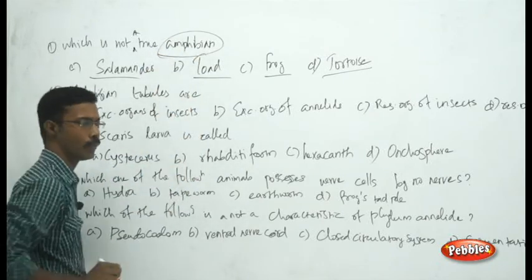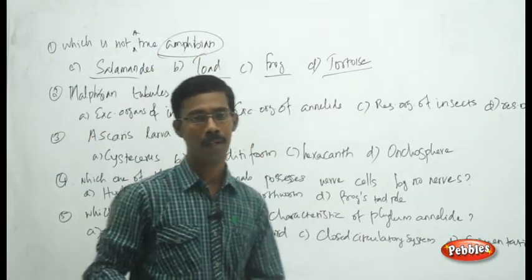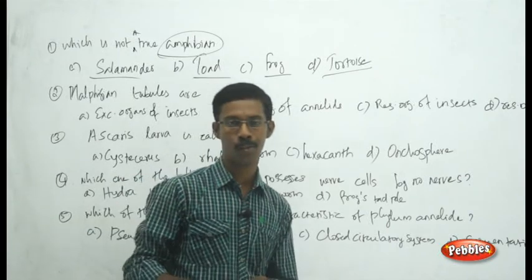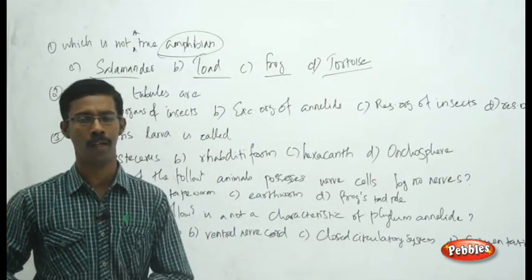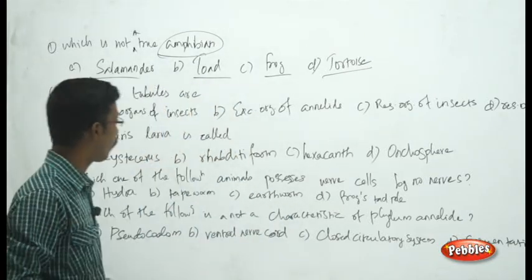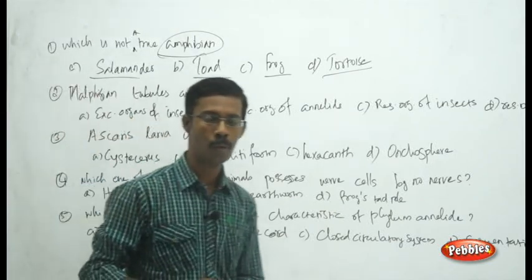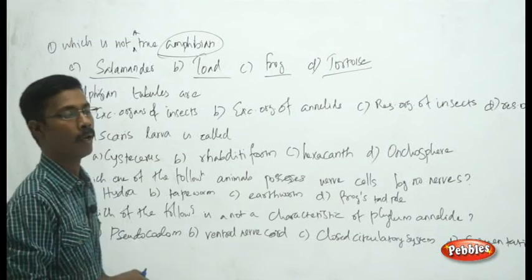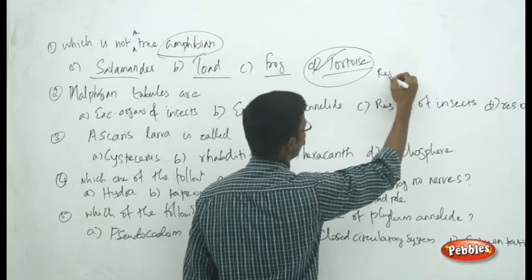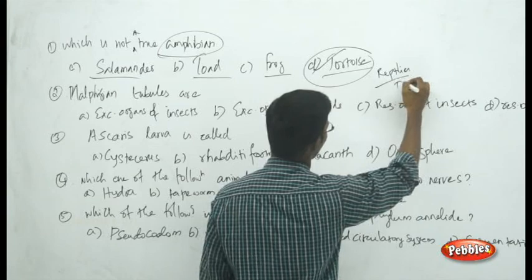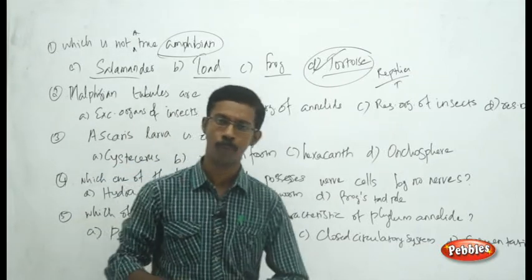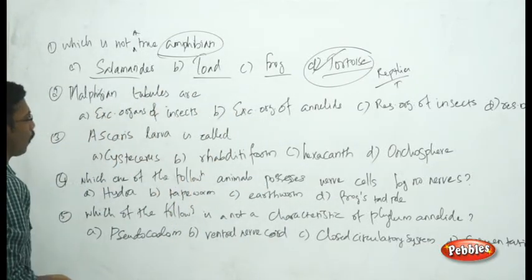You have to choose which one is not a true amphibian. As I told you, in Chordata there are many classes, and two of them are Reptilia and Amphibia. Among the four choices, one belongs to reptiles, not amphibians. That one is tortoise. Tortoise belongs to Reptilia, not Amphibia. All the remaining — salamander, toad, and frog — belong to Amphibia. The correct answer is tortoise.